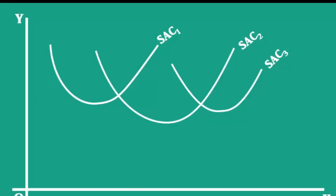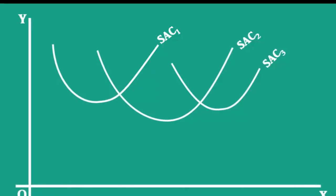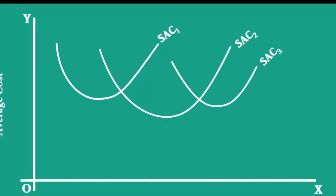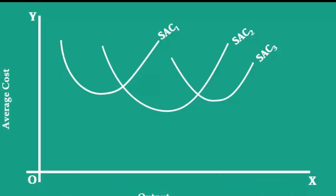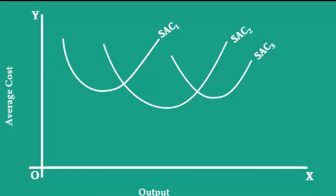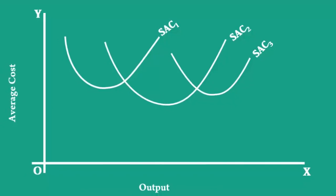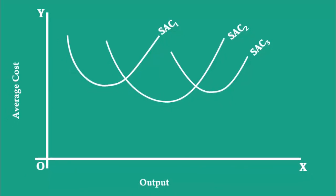Ultimately, these curves are all the constituents of the long run average cost curve. We are going to derive the long run average cost curve from these three curves. Just draw a smooth curve enveloping all the three curves. This is the long run average cost curve.